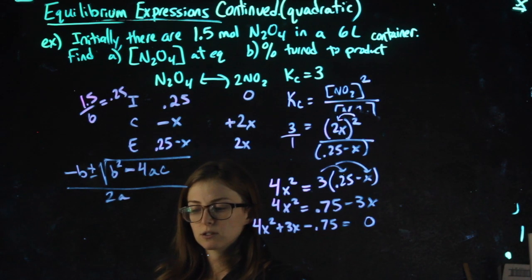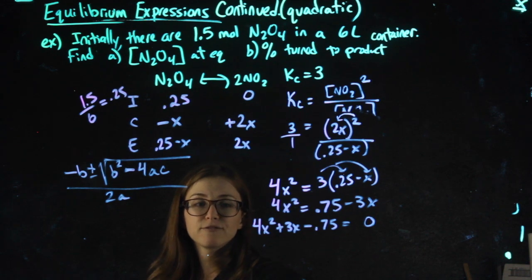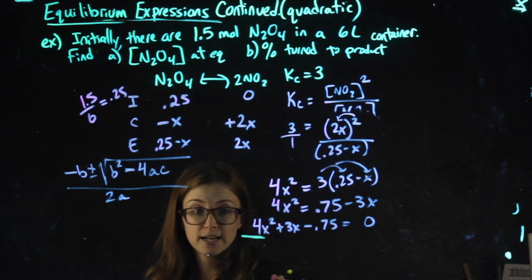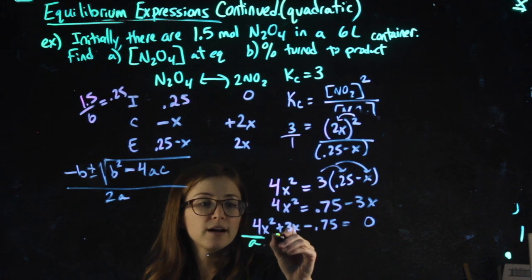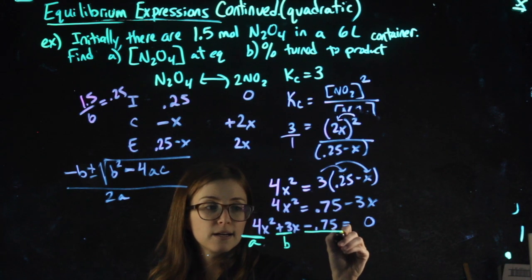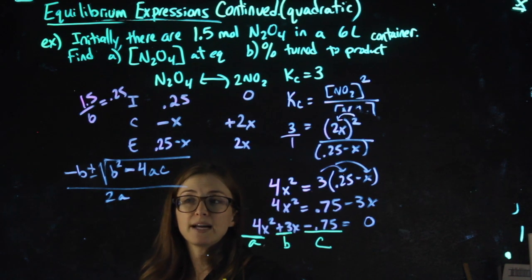I'm going to switch markers. Now the number in front of my x squared, including if it were positive or negative, that's my a. The number in front of my x, including if it's positive or negative, is my b, and the number that doesn't have an x, including the positive or negative, is my c.